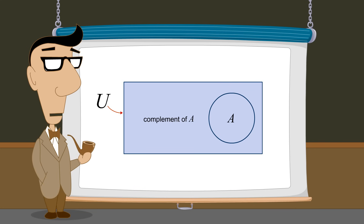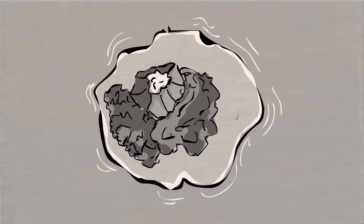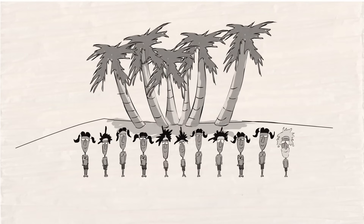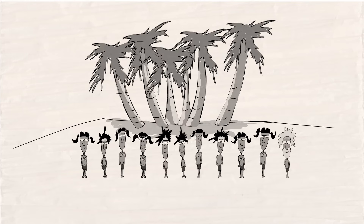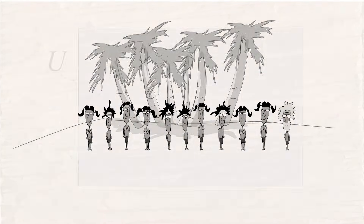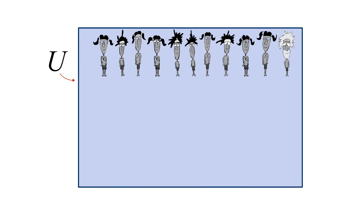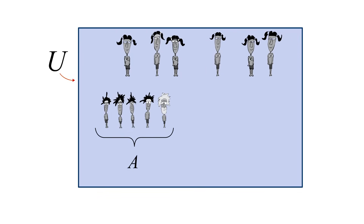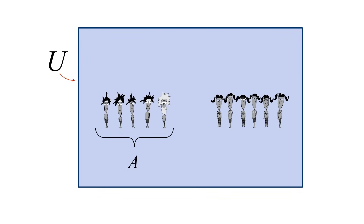As an example, on the primitive island of Coccoloco, we could define the universal set to be the set of all human inhabitants. Then, if set A contains all male Coccoloconians, the complement of set A would be the collection of all female Coccoloconians.